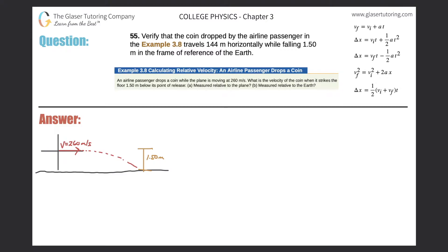Number 55: Verify that the coin dropped by an airline passenger in Example 3.8 travels 144 meters horizontally while falling 1.5 meters in the frame of reference of the Earth. So it basically says in that example, an airline passenger drops a coin while the plane is moving at 260 meters per second.